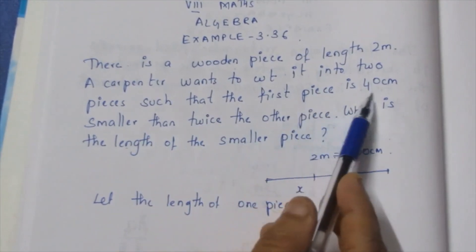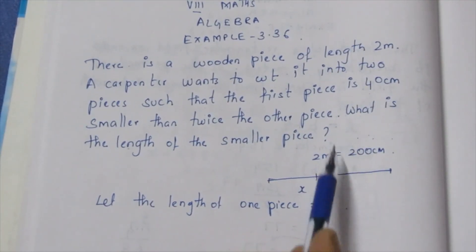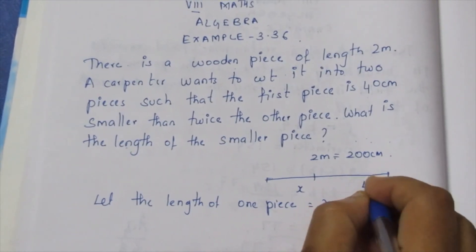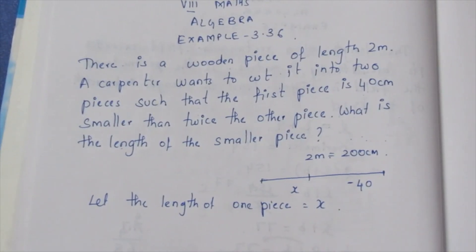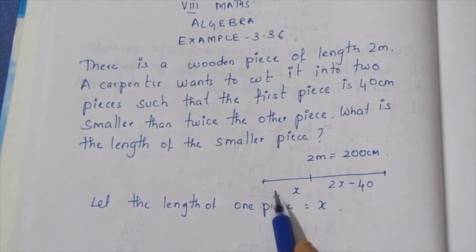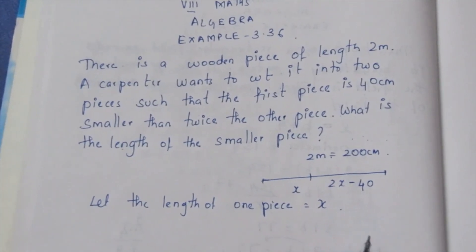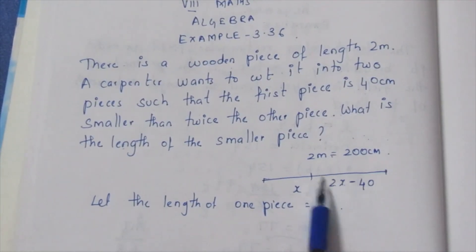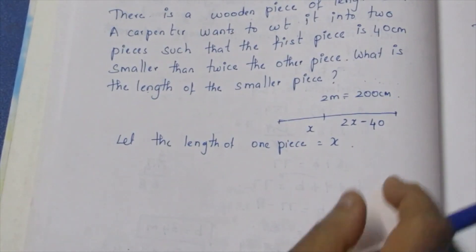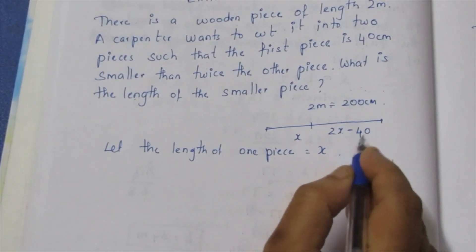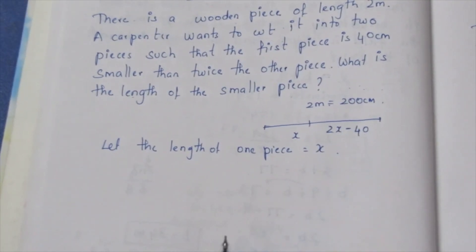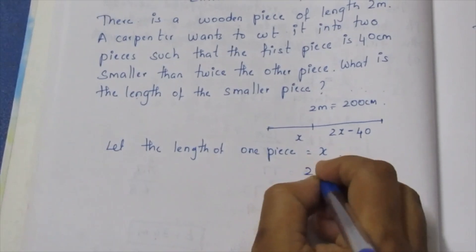This is the first piece. The first piece is 40cm smaller than twice the other. So the second piece is twice the other minus 40cm, which gives us 2x minus 40. So the next piece is 2x-40.